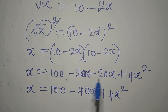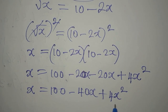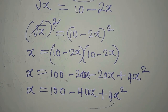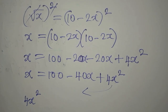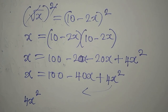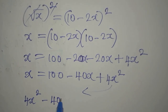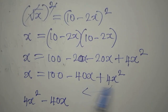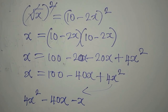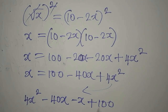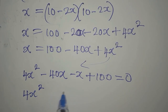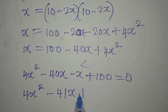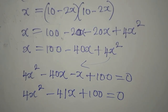The next step is to rearrange. I'm going to bring everything to one side. So 4x squared stays, the minus 40x remains, and then the x from the left side becomes negative x, giving negative 41x. The 100 stays, and everything equals zero.